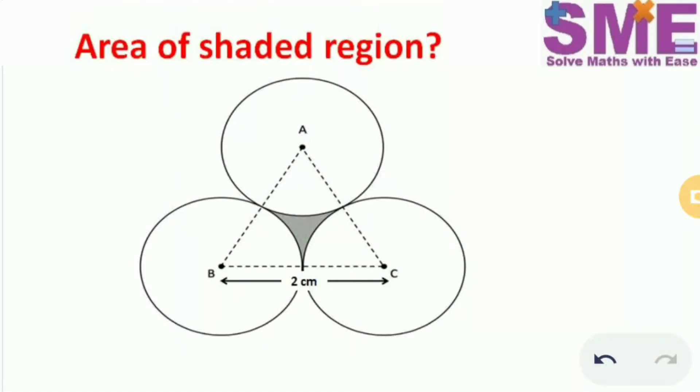Welcome to my channel solve maths with ease. In this question we have three equal circles and an equilateral triangle is present between these three circles.